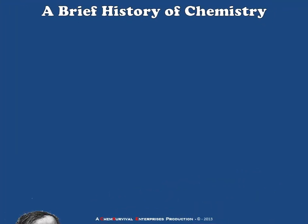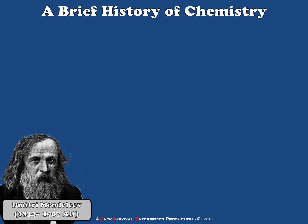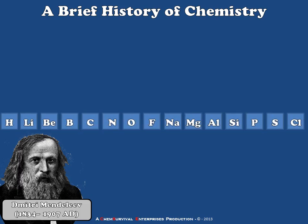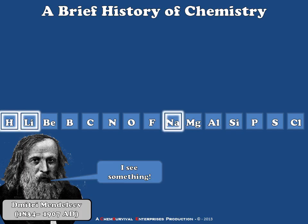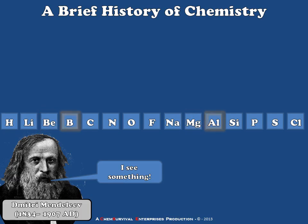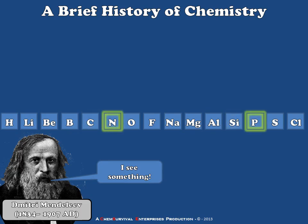The final scientist I'd like to discuss is Dmitri Mendeleev, a Russian chemist working in the 1800s. What Mendeleev noted was that if he took some of the elements of his day and lined them up in order of increasing atomic number, he saw a trend. He noticed that hydrogen, lithium, and sodium had similar chemical properties, while beryllium and magnesium had similar properties, as did boron and aluminum, and carbon and silicon. This trend continued through all the elements known at that time.